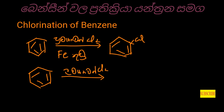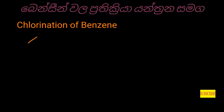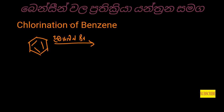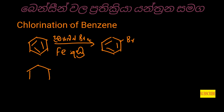Chlorobenzene. BR2, bromination reaction with FeBr3 catalyst. The reaction produces bromobenzene. Benzene reaction with BR2.